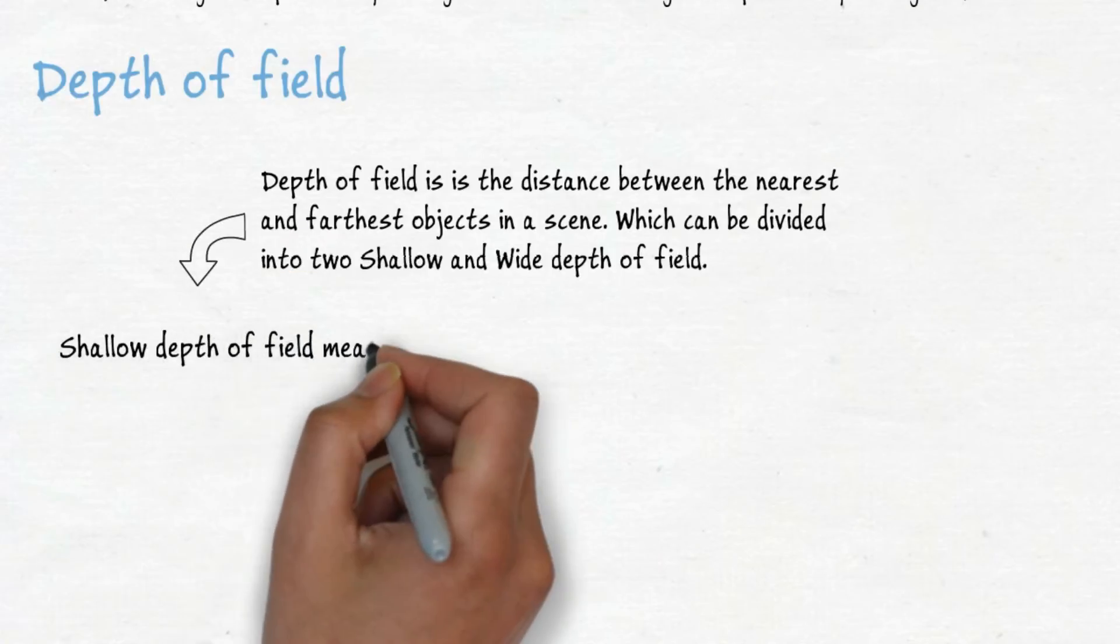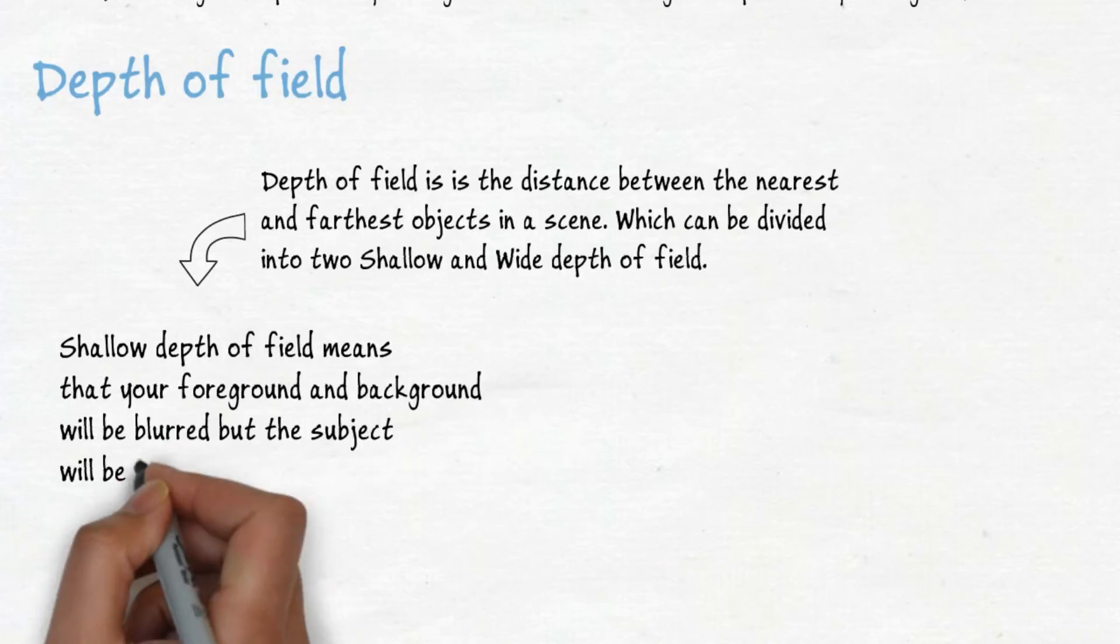Shallow depth of field means that your background will be blurred, but the subject will be in focus.